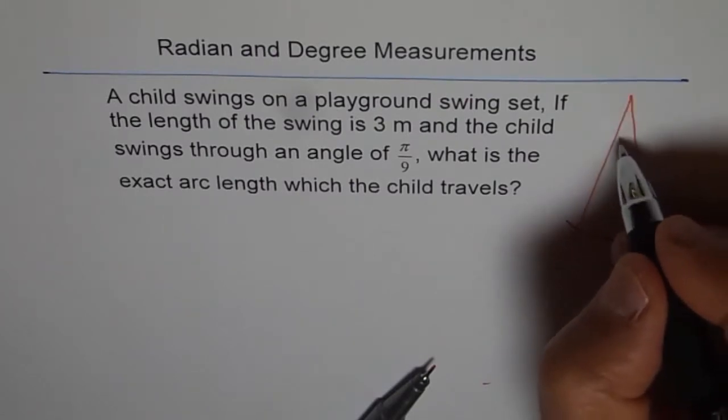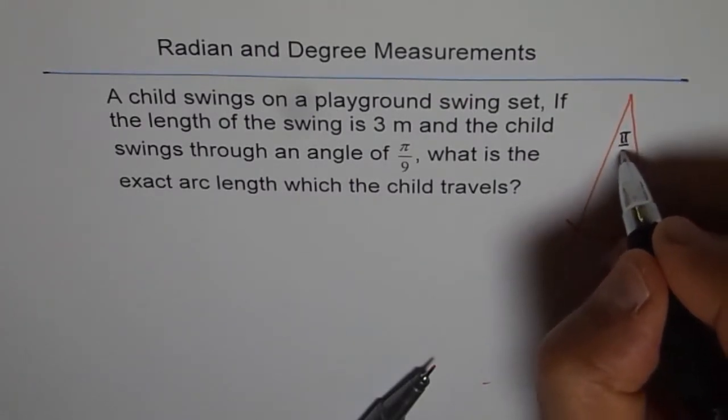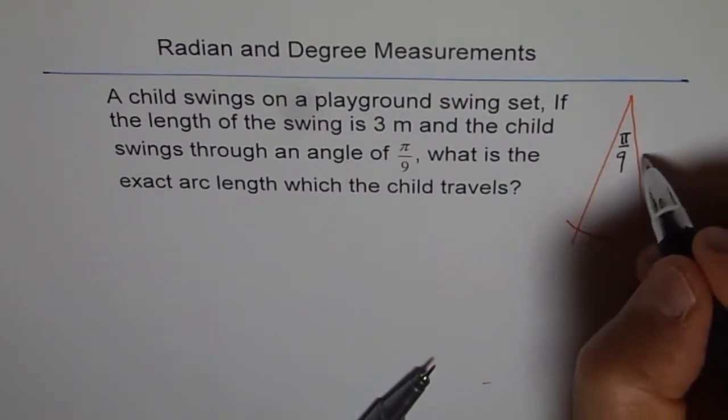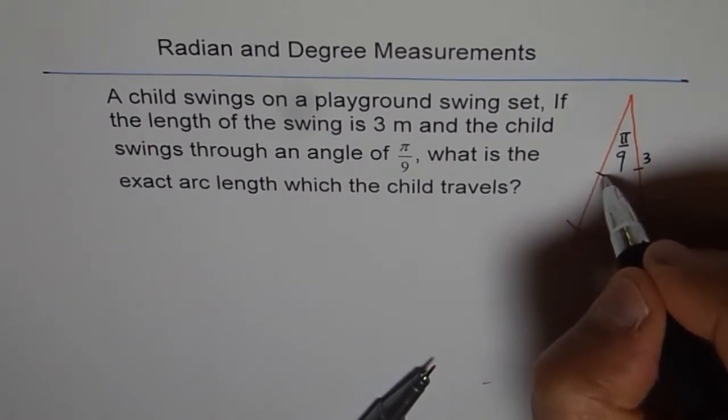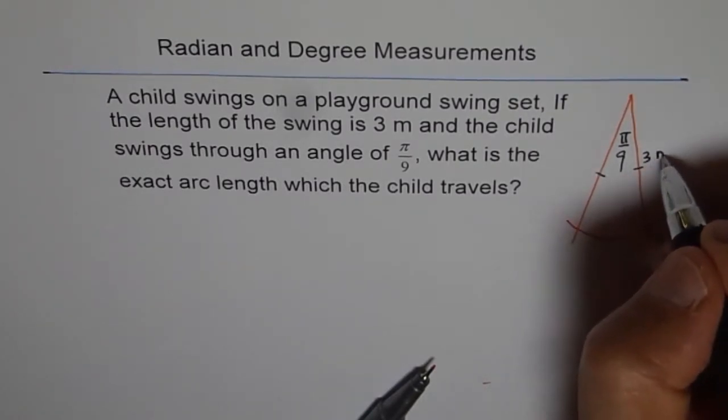Now, we are given that this angle is π by 9 and 3 meters is the length of the swing. So this has to be 3, this has to be 3, right? 3 meters, correct?